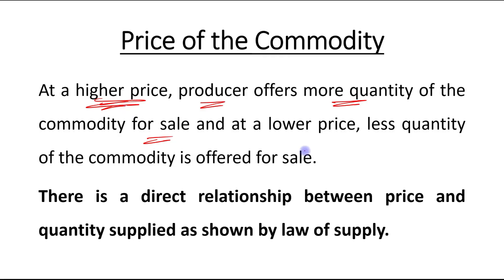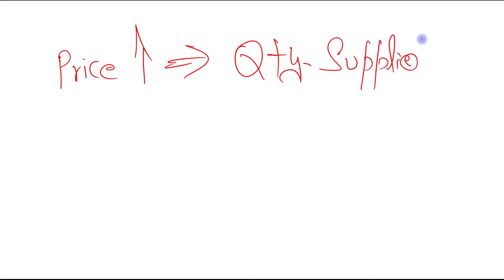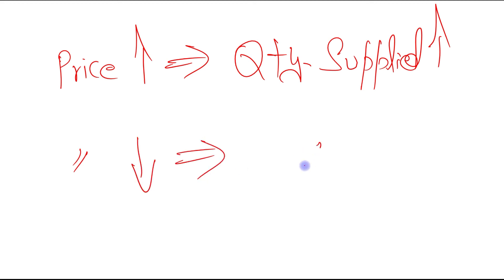When the price is higher, the producer's willingness to sell is more, so more quantity of the commodity is offered for sale. When the price is less, the willingness to sell will be less, so there will be less quantity offered for sale. In simple words, when price increases, quantity supplied increases, and when price decreases, quantity supplied also reduces.